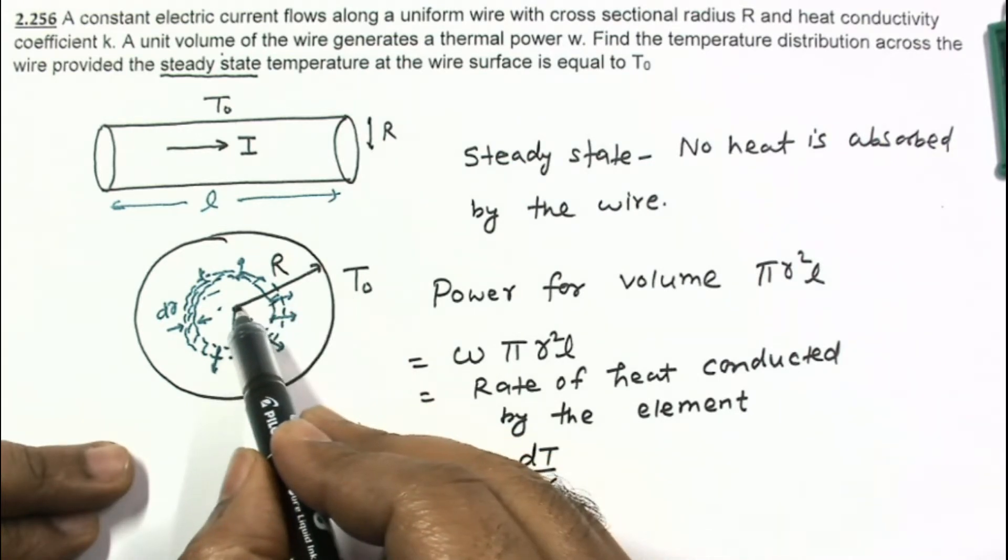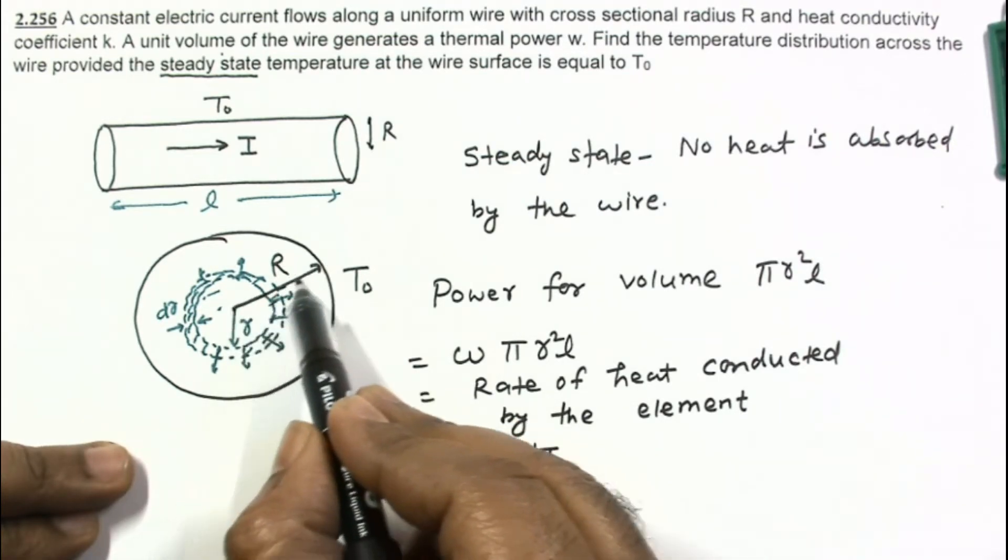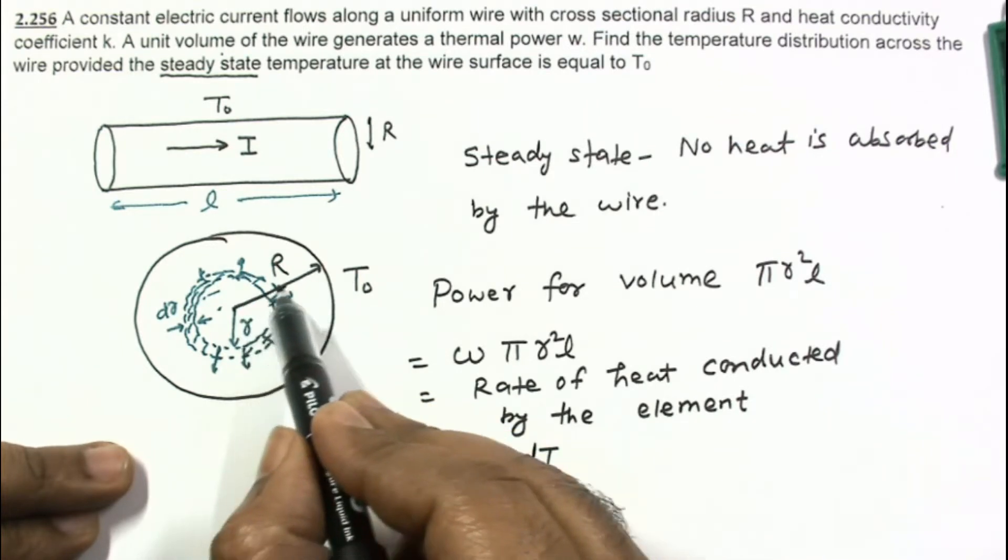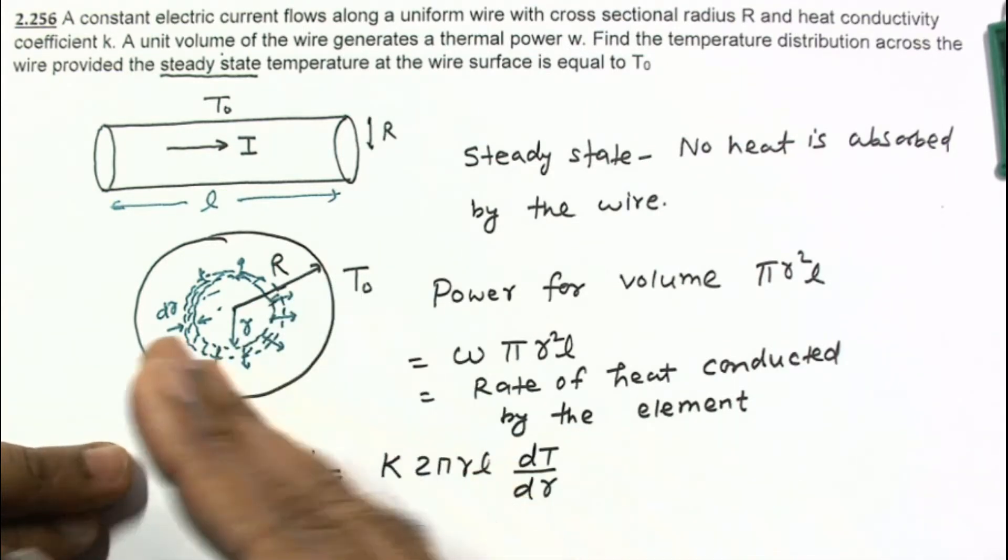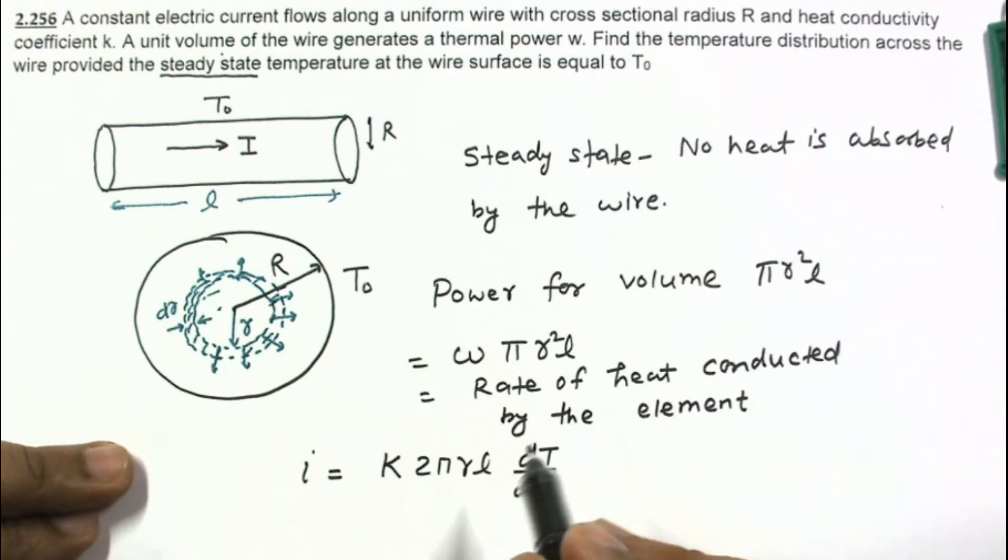As we are going in this direction, heat is being conducted in this direction. So temperature in this direction must decrease. So in the direction of r, temperature is decreasing. So I am using a minus sign here. This I is also equal to ωπr²L.